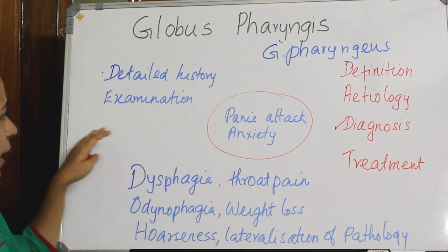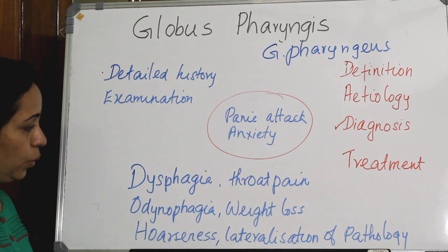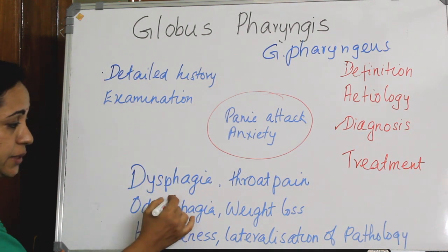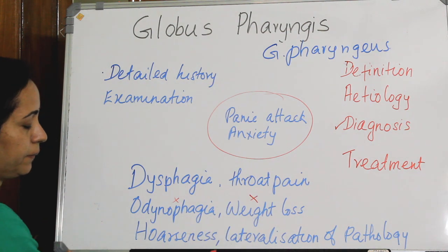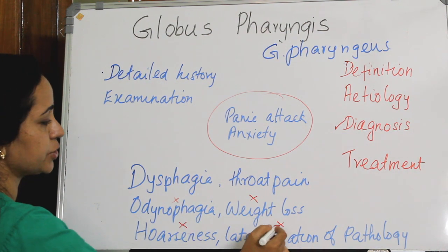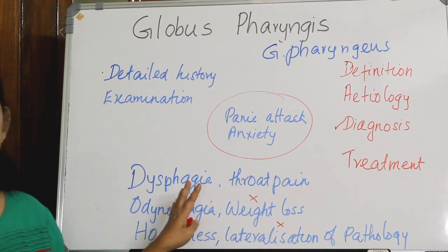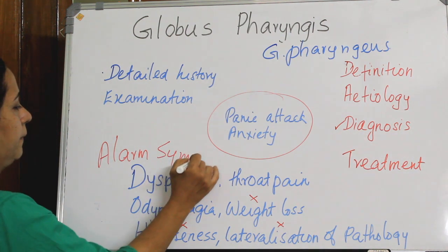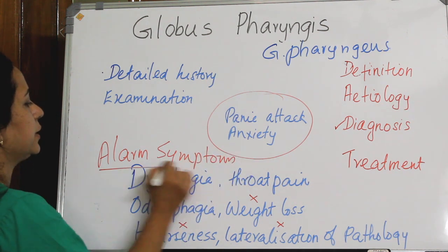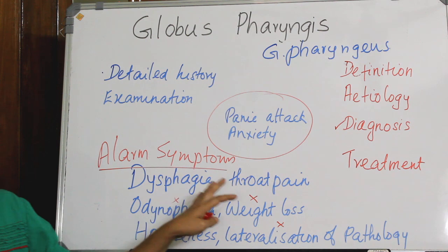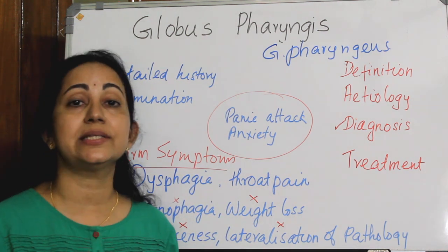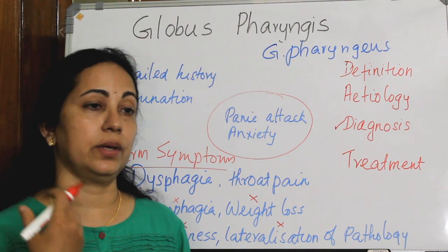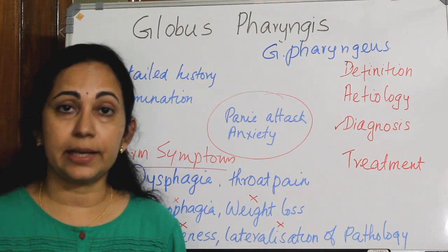In classical Globus, dysphagia, throat pain, odynophagia, weight loss, hoarseness, and lateralization of pathology are all absent. If any of these are present, they are alarm symptoms. In that case, more time should be given to detailed evaluation of the patient, as these warrant further investigation.